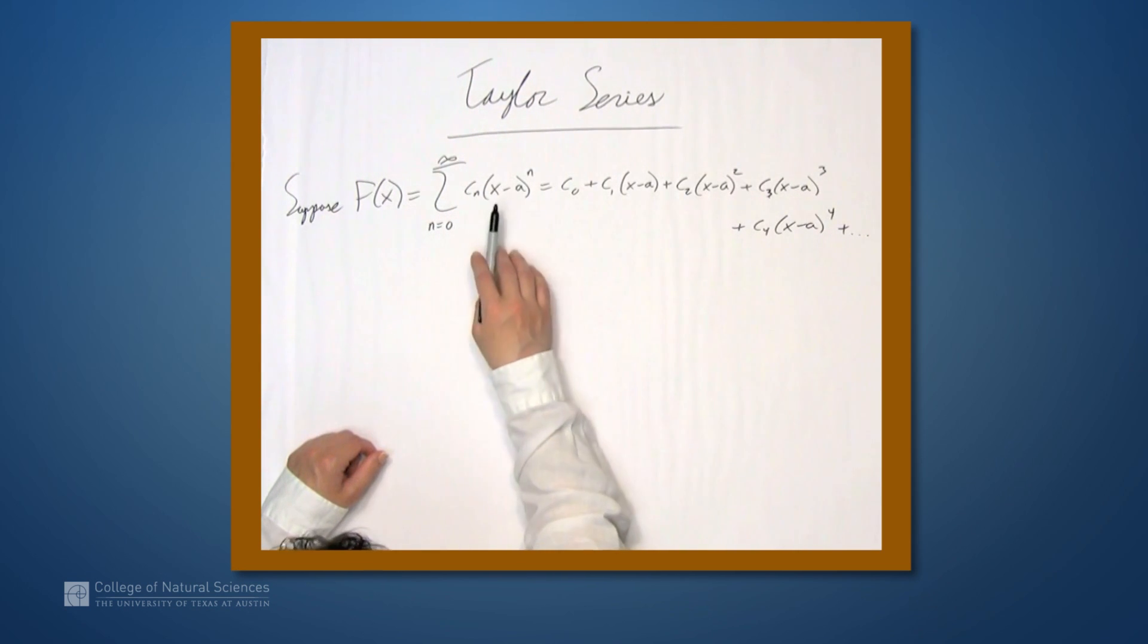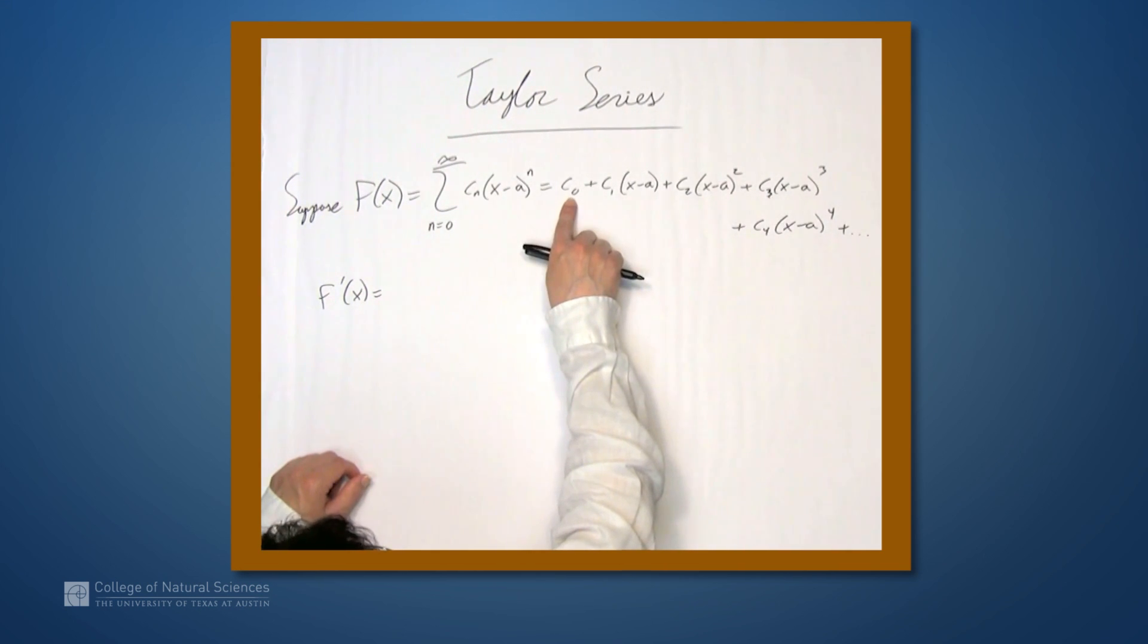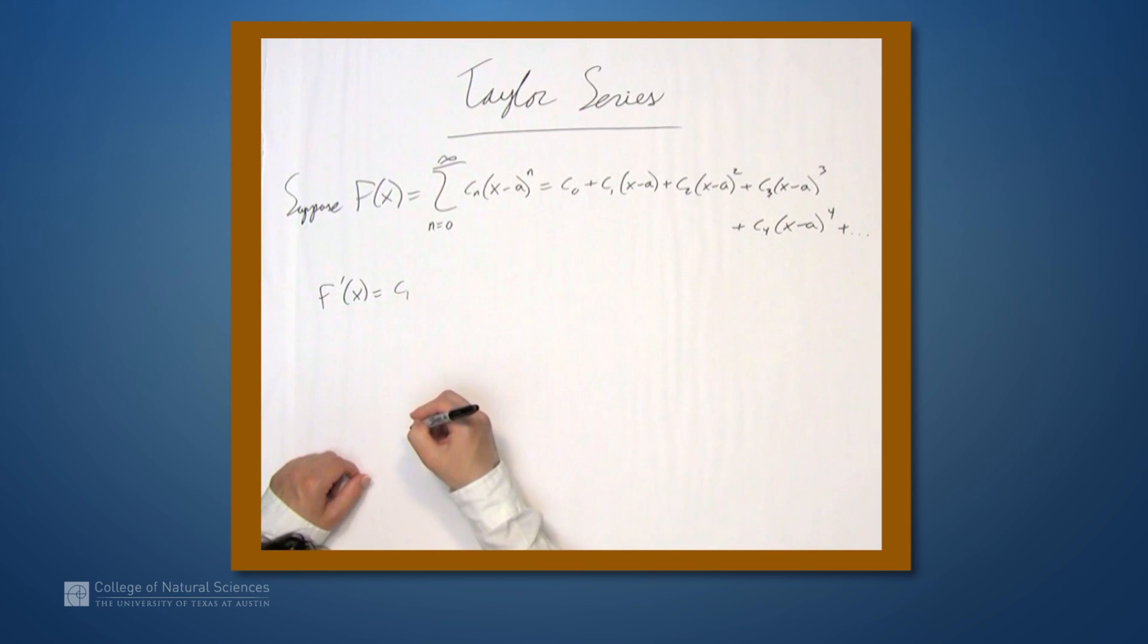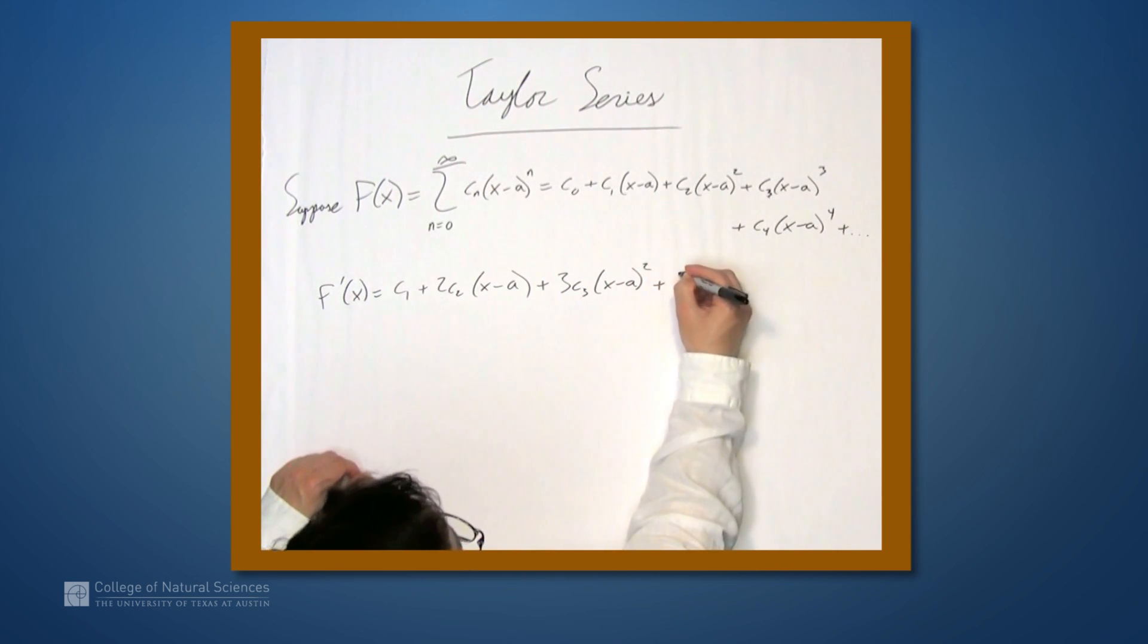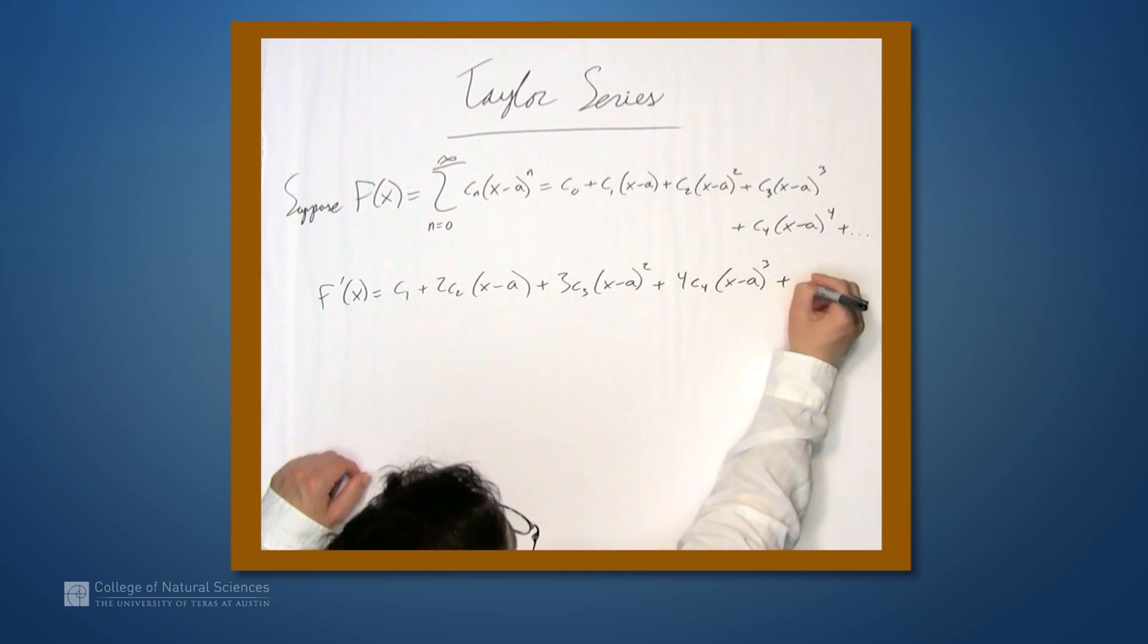Now we know that we can differentiate power series, and in fact we can differentiate them term by term. So we can consider f' and we know this to be the sum of the derivatives of all these terms. The derivative of c0 is 0, so that disappears. The derivative of c1x-a is just c1. The derivative of the next term is 2c2 times x-a. The derivative of the next term is 3c3x-a squared, and then plus 4c4x-a cubed, and so on.